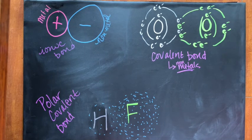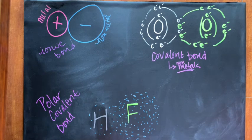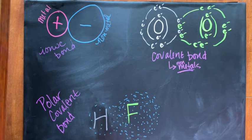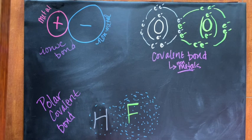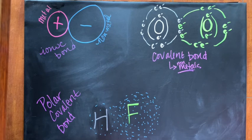Hi chemistry students. In chapter 12 we start talking about bonding. We've done quite a bit of talk about ionic bonding and ions, and now we're going to start talking about the other types of bonds that we encounter.